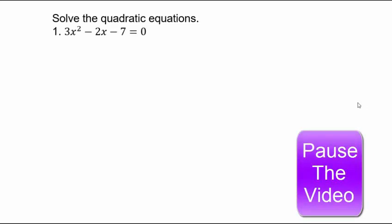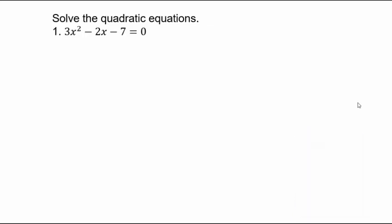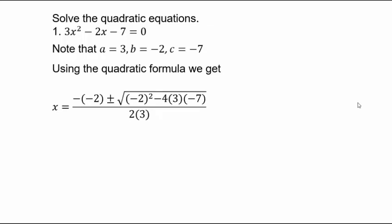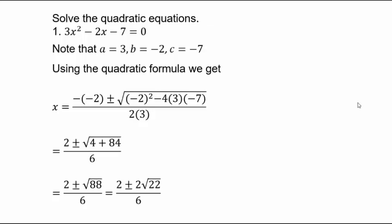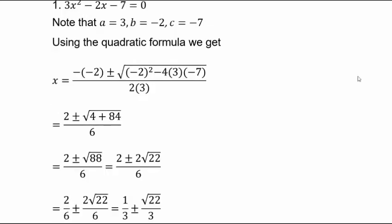Let's use the quadratic formula. For 3x² - 2x - 7 = 0: a = 3, b = -2, c = -7. Plugging into (-b ± √(b² - 4ac)) / (2a): the discriminant gives √88 = √(4·22) = 2√22. So (2 ± 2√22) / 6 reduces to 1/3 ± (√22)/3. The quadratic formula saves us from completing the square every time.